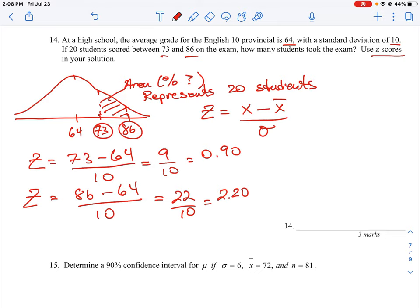So we can now use a function, a calculator function, to calculate what is the area between 0.9 and 2.2. So the way we use that is on our calculator, our TI calculator, you're going to use the normcdf function, and we don't have to put in the mean of 0 and the standard deviation of 1 when we're using the z-scores. You can just type in the actual z-scores, so we're going to go from 0.9 to 2.20. The calculator assumes we're using a mean of 0 and a standard deviation of 1, and this is going to give us 0.1702.